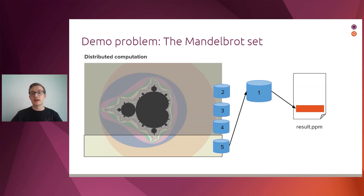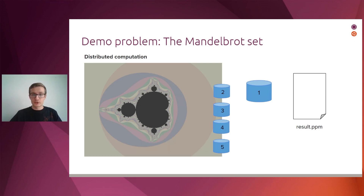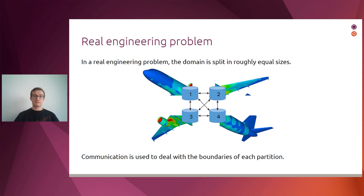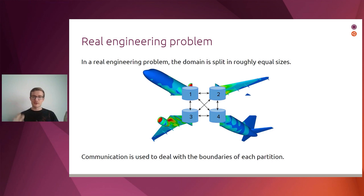In the end, the full image ends up on disk. That's essentially how this image was generated. On real engineering or simulation problems, the approach is very similar: you take your domain — the area of study — and split it into roughly equally computationally expensive sets. Communication is more complex because different parts of the domain interact with each other, and you must ensure that communication happens correctly. But the essence is the same.